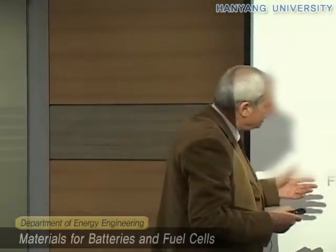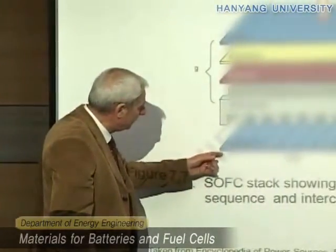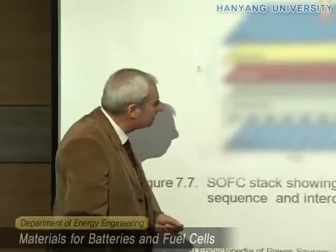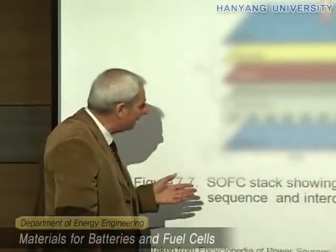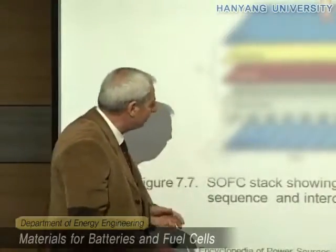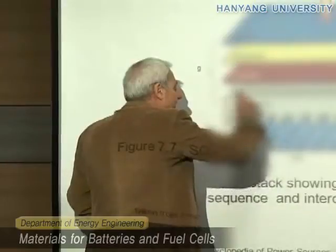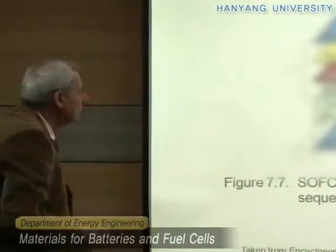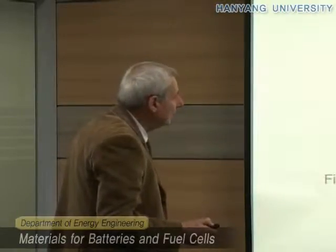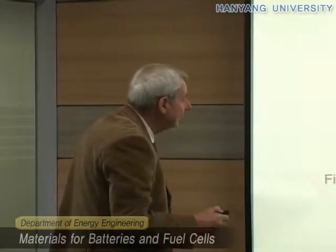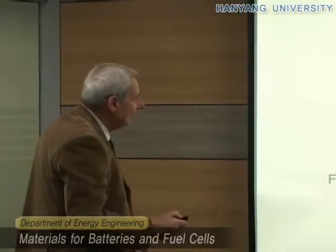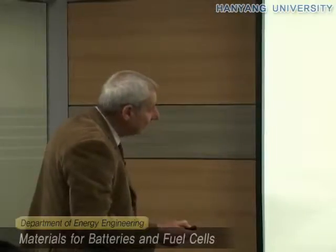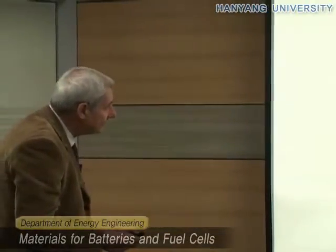The other configuration is planar. Here we have the anode, where the fuel comes in — which can include reformed hydrogen — and then the electrolyte and cathode. Each unit consists of anode, electrolyte, and cathode. Units are stacked and interconnected. The interconnection must withstand very high temperature and also allow gas to pass through.